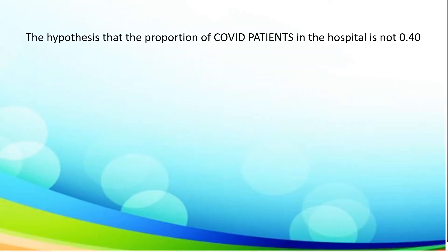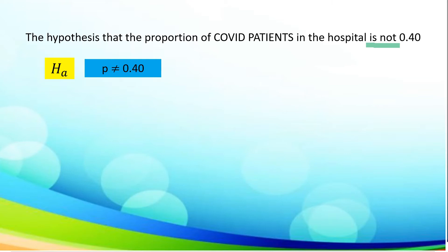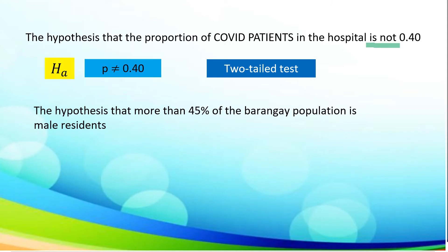Next: the hypothesis that the proportion of COVID patients in the hospital is not 0.40. The keyword is not, which refers to P is not equal to 0.40, which falls under two-tailed.